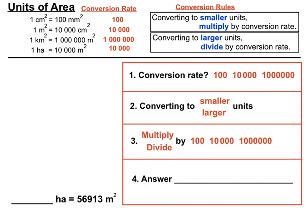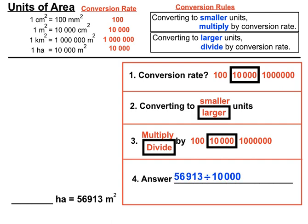Our last example: converting from metres squared to hectares. Using that 10,000 conversion rate again, and since hectares are bigger units, we divide by 10,000 — moving the decimal point four places to the left. The decimal point ends up between the 5 and the 6, giving an answer of 5.6913 hectares.